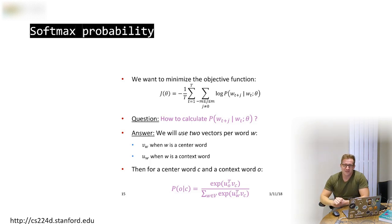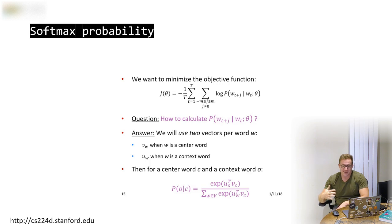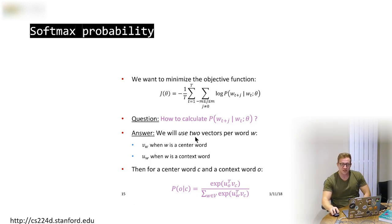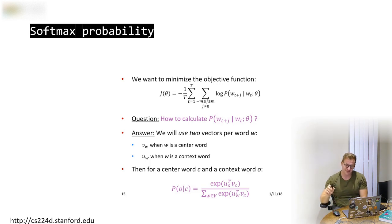The remaining question is how to compute the probability of a word given its context — this is where the softmax comes in. A softmax computes a probability distribution. When you exponentiate things you make them very large, so larger values dominate, and you ensure they're positive numbers suitable for probabilities. We need to treat the centre word and context word as two different vectors. We take the dot product of the centre word and context word, and divide by the sum of the context word against every other word in the dictionary — this normalises to one, giving a probability distribution over the entire vocabulary.